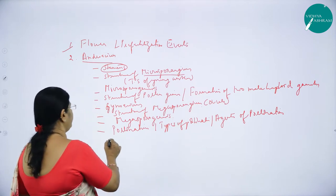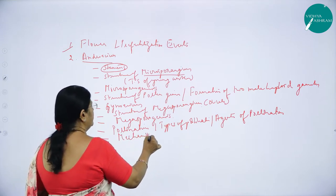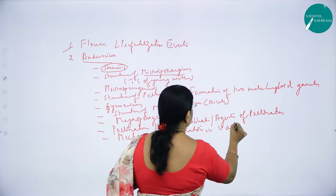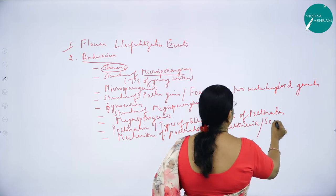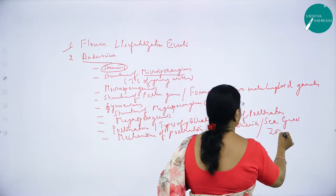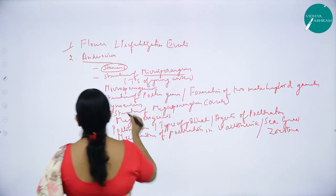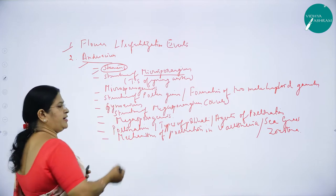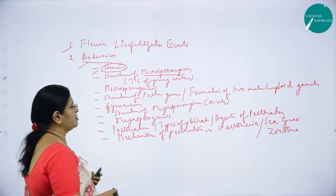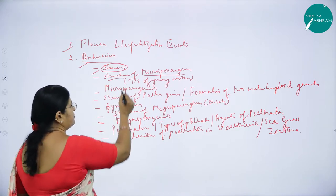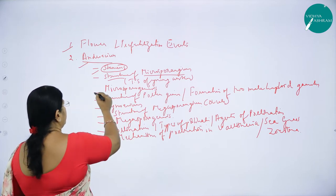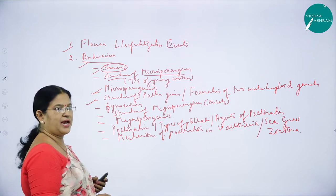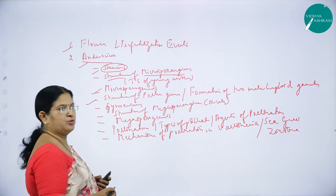Under abiotic agents, we studied the mechanism of pollination in Vallisneria and seagrass called Zostera. We reviewed that stamen consists of filament and anther lobe. After microsporogenesis and pollen grain structure, we covered the formation of two male haploid gametes — a generative cell undergoes mitotic division to form two male haploid gametes.